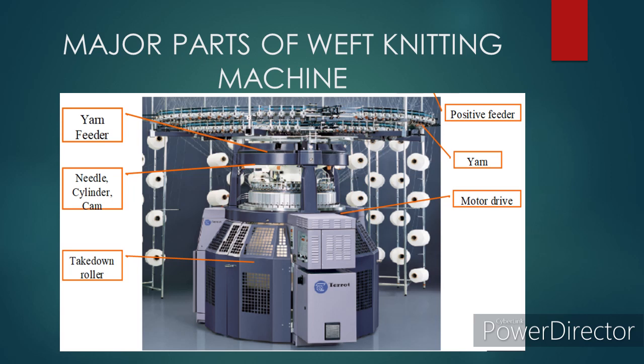Number seven, takedown roller — the takedown and winding functions are kept separated in order to allow smooth running of the machine and avoid possible fabric distortion. The takedown motion consists of two or three rollers placed beneath the cylinder. In the simplest configuration, the fabric passes between two rollers that stretch it by rotating in opposite directions. The best system is the three-roller takedown motion, which pulls the fabric without slipping and without exerting too much pressure.